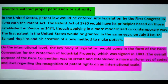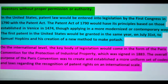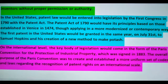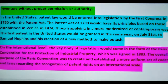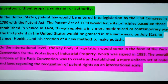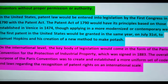The Patent Act of 1790 would have its principles based on those established in Venice in 1474, though applying them in a more modernized or contemporary way. The first patent in the United States would be granted in the same year, on July 31st, to Samuel Hopkins and his creation of a new method to make potash. On the international level, the key body of legislation would come in the form of the Paris Convention for the Protection of Industrial Property, which was signed in 1883. The overall purpose of the Paris Convention was to create and establish a more uniform set of codes and laws regarding the recognition of patent rights on an international scale.